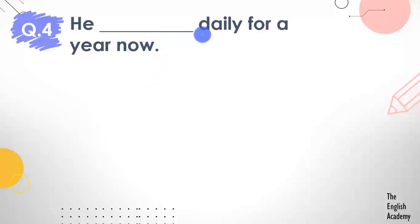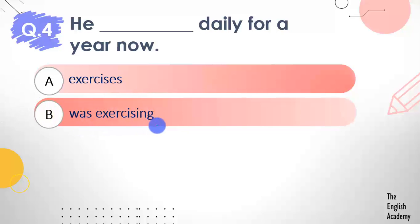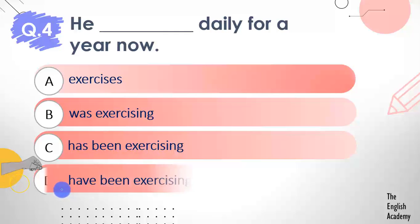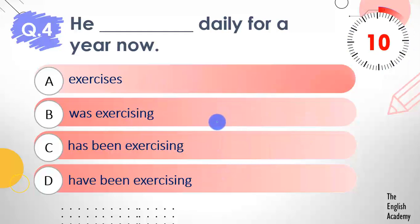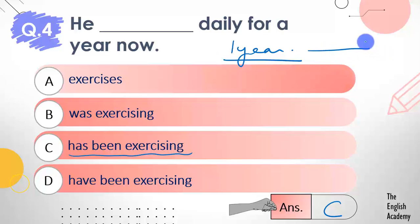Question number 4: He ___ daily for a year now. Options: A) he exercises daily for a year now, B) he was exercising daily for a year now, C) he has been exercising daily for a year now, D) he have been exercising daily for a year now. The answer is option C — he has been exercising daily for a year now. When an action has been going on for a year and is still continuing in the present, we use present perfect continuous tense.